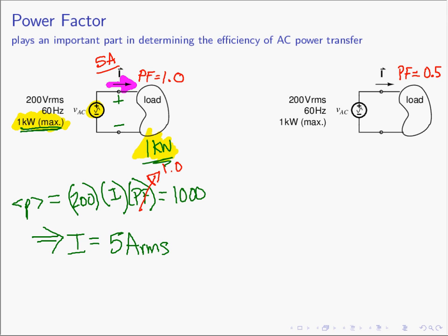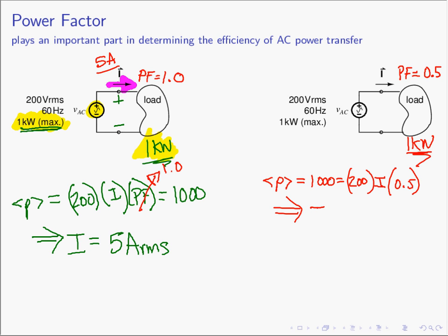Now let's look at the situation where our load has a power factor of 0.5. If we do a similar derivation and want one kilowatt at our load again, we know that's going to be the real power—the average power of 1,000 watts—equal to the voltage of 200 times the current I, with a power factor of 0.5 cosine theta minus phi. When we do this calculation, the current required is going to be 10 amps RMS.